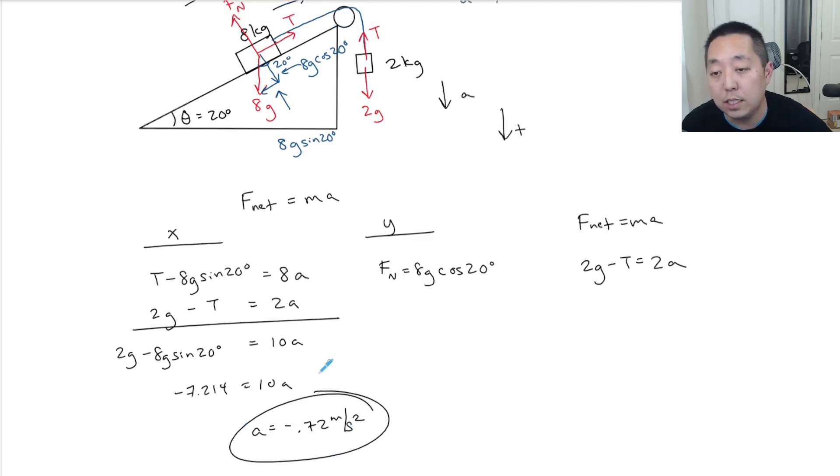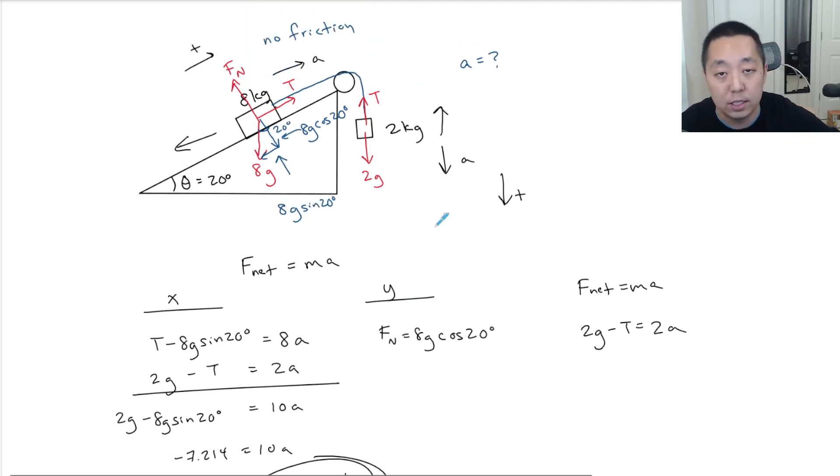What that means is I had it wrong—it's not falling. Actually this block is sliding down this way and this guy's going up at 0.72 meters per second squared. That means my guess was wrong, but it's important to establish a direction that you think the guess is in to make sure all the positive and the negative signs are set correctly.